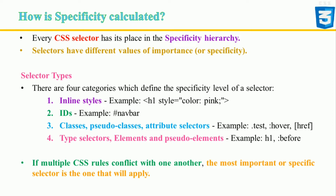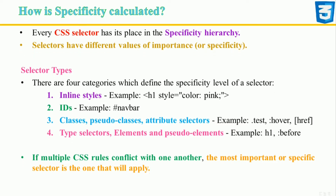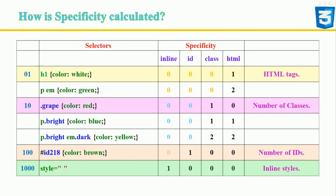If multiple CSS rules conflict, the most specific selector will be applied. Specificity is found as follows: the thousands digit denotes the presence of inline styles; the hundreds digit denotes the number of IDs specified; the tens digit denotes the number of classes specified; and the ones digit denotes the number of HTML tags specified in the declaration.